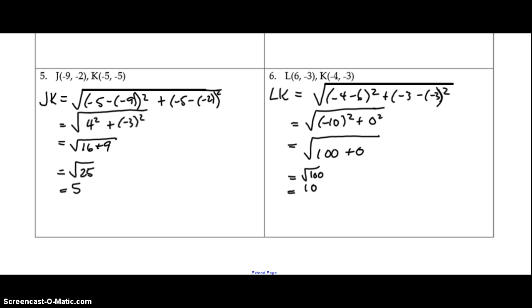You might notice as well with number 6 that one of these zeroed out. Negative 3 minus negative 3 is 0. If you think about these two coordinates, 6 comma negative 3 somewhere here-ish, and negative 4 negative 3 is somewhere around here. So what this gives us is a horizontal line.